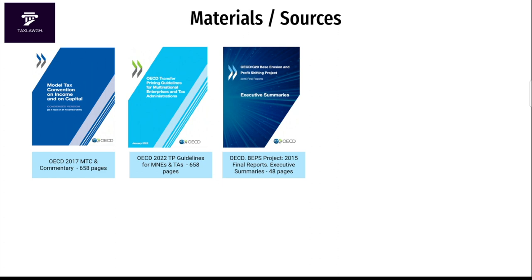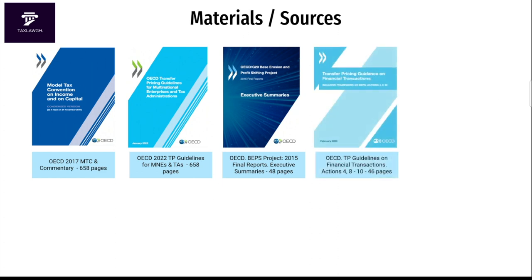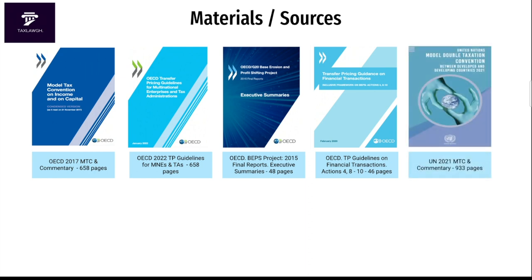The next source is the OECD's BEPS Project 2015 Final Report executive summary — it's a 48-pager. Do well to read this as it covers all 15 BEPS action points, giving you a good grasp of BEPS, because you cannot write an international tax paper without knowing what BEPS really entails. Then there are the OECD Transfer Pricing Guidelines on Financial Transactions — a 46-pager covering BEPS Action 4 and Actions 8 through 10.